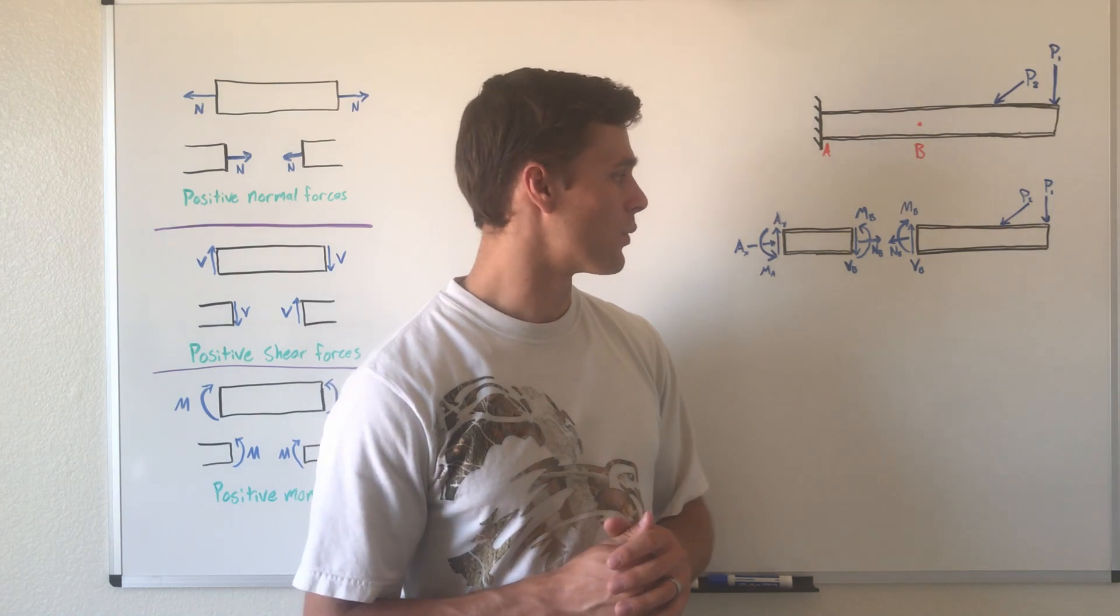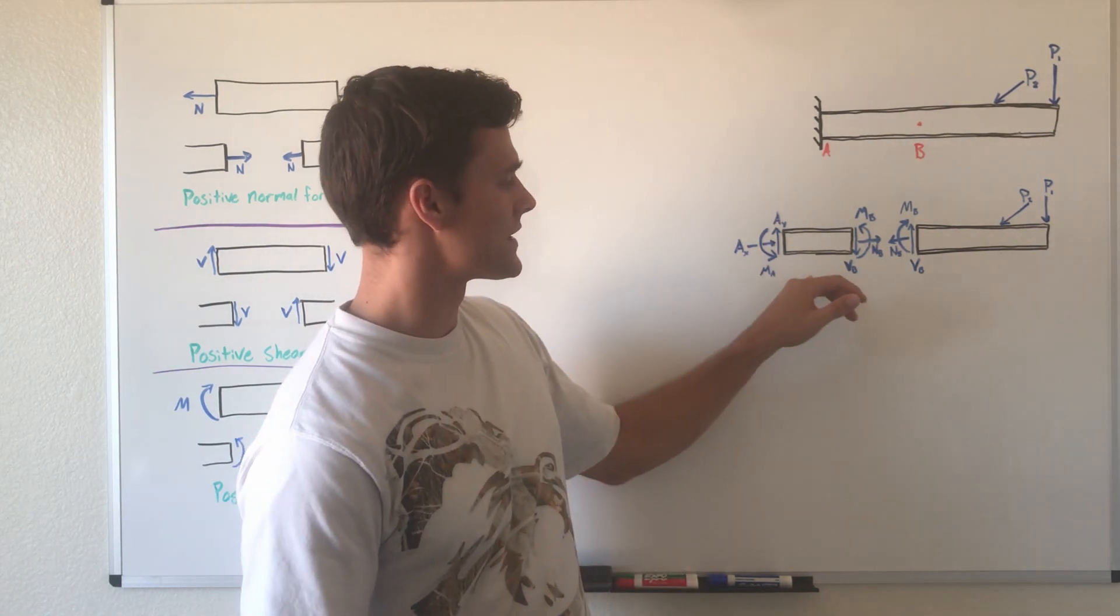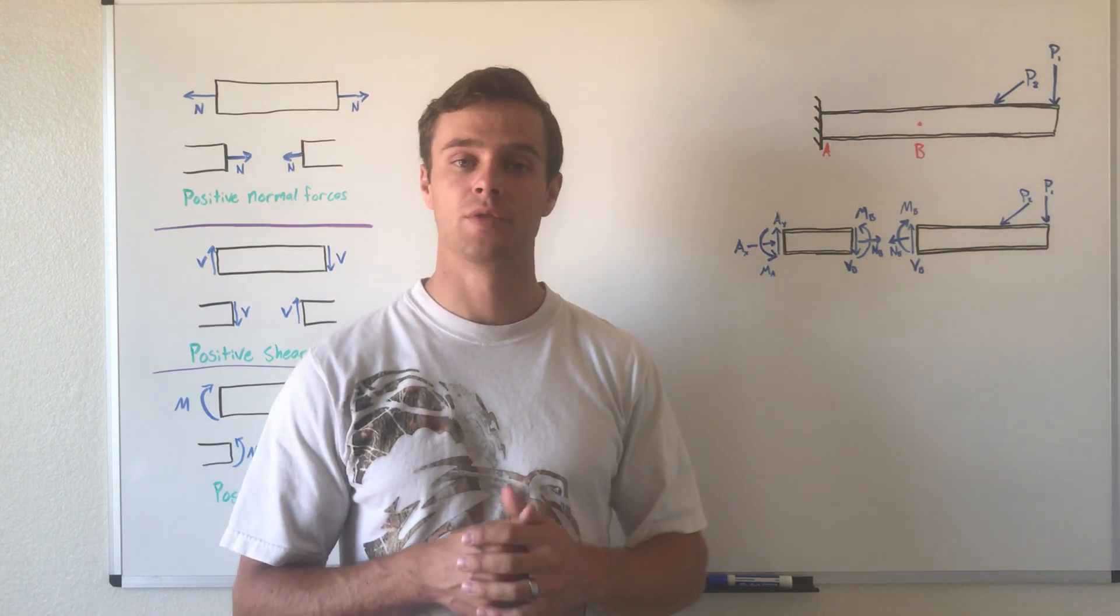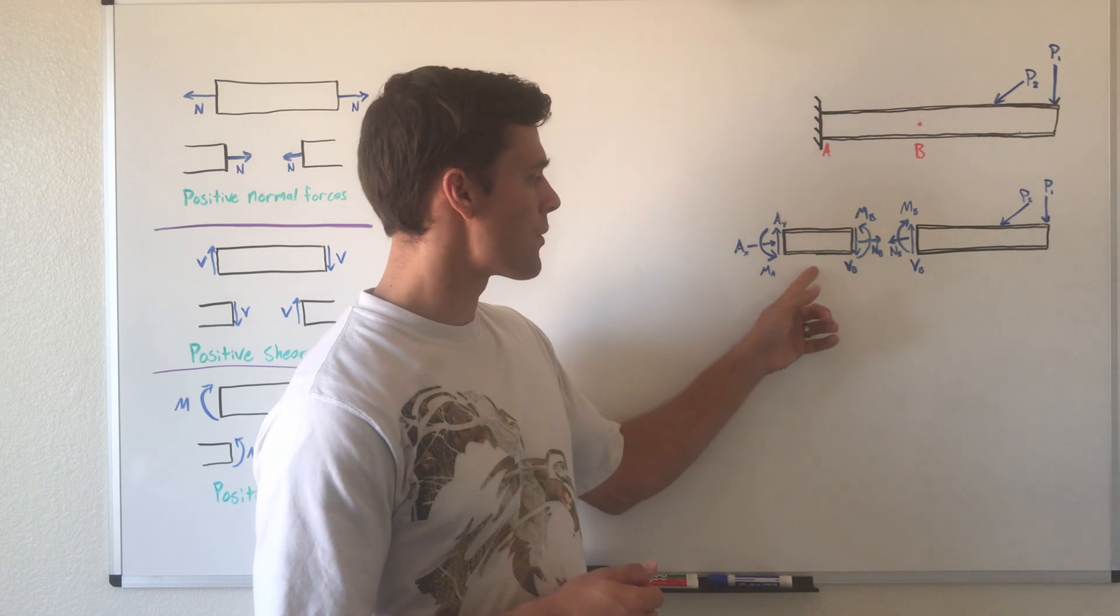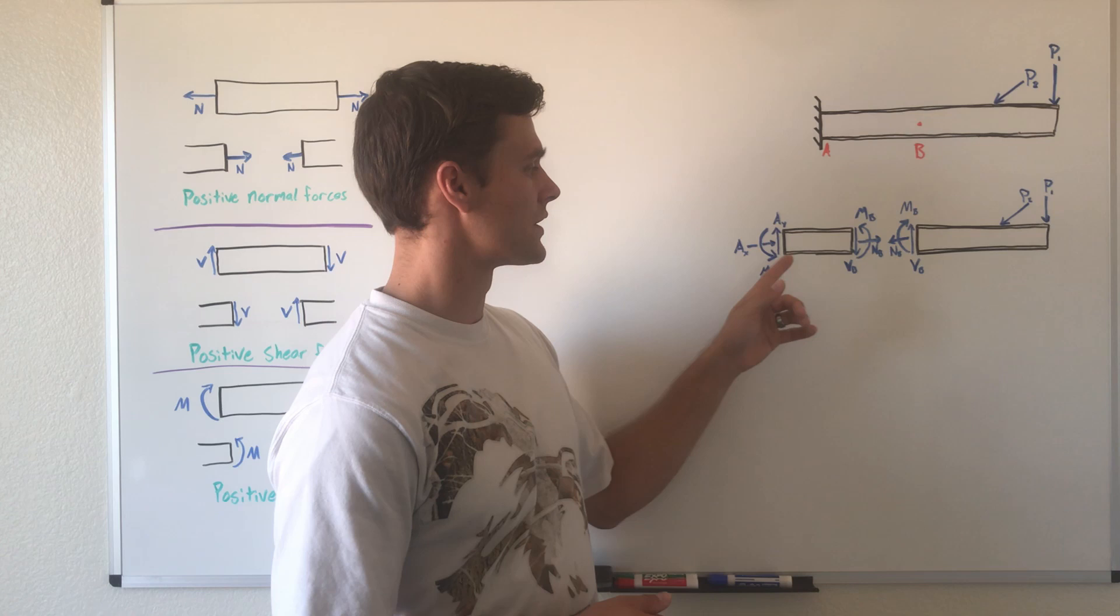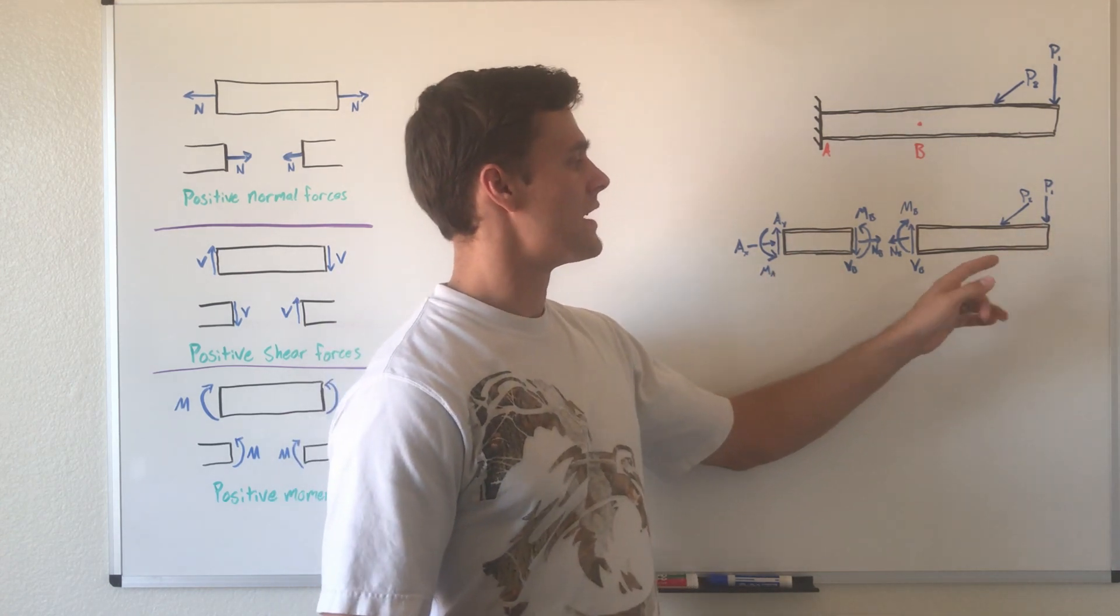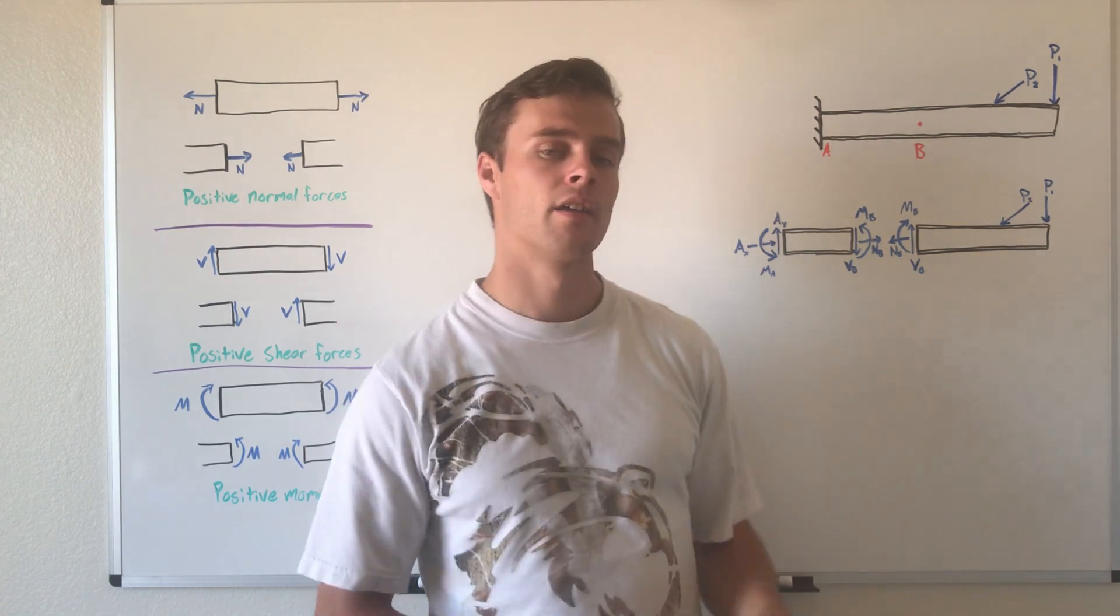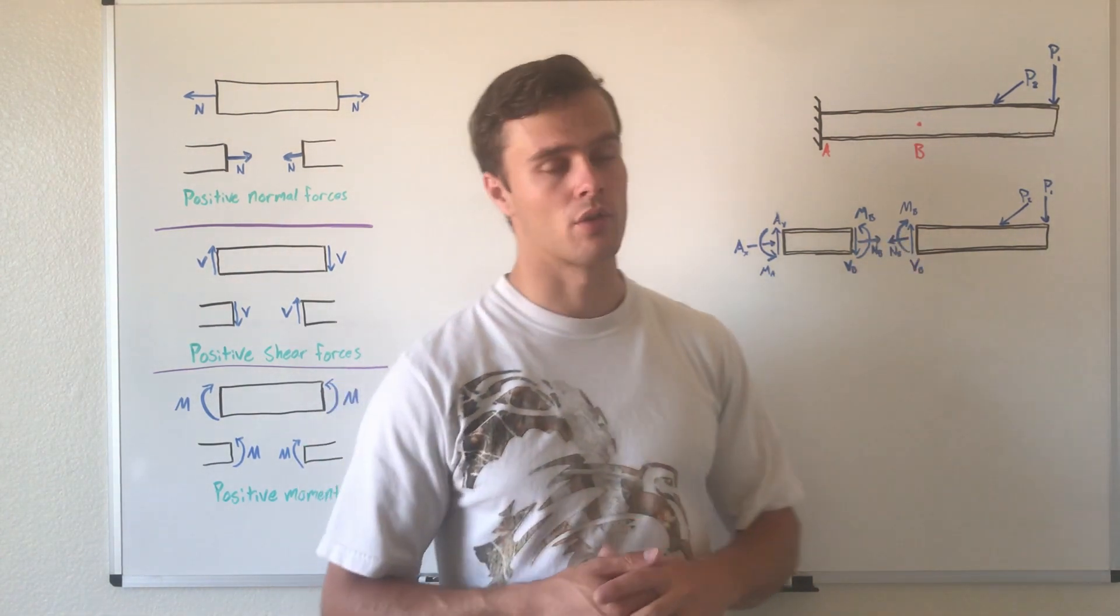The way we find these internal forces is to pick one of these sides and use equilibrium equations. We probably don't want to pick this side because we have these unknown reaction forces. We're probably given P1 and P2, so if we solve on this side, we can solve for the unknown internal forces.